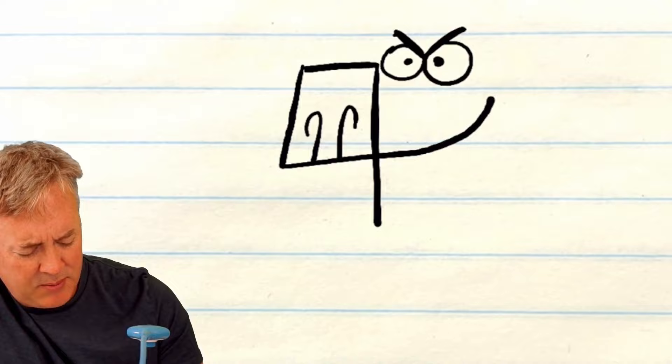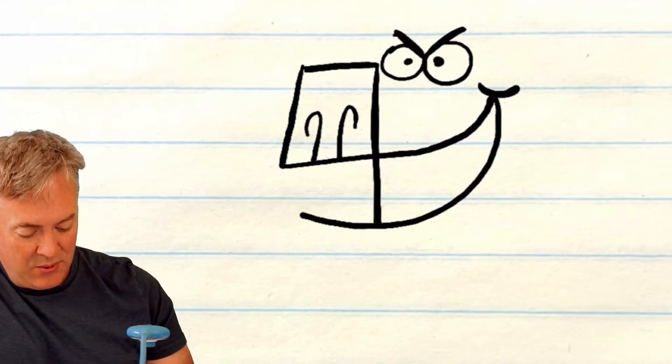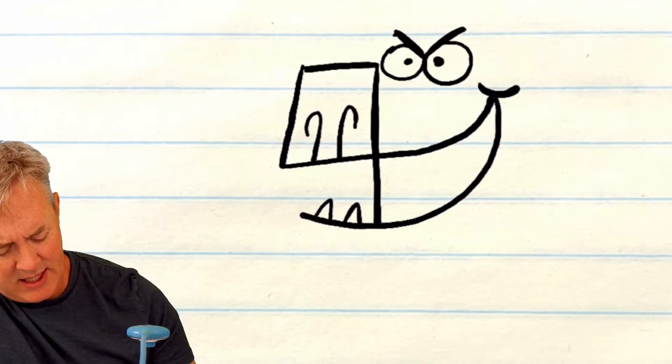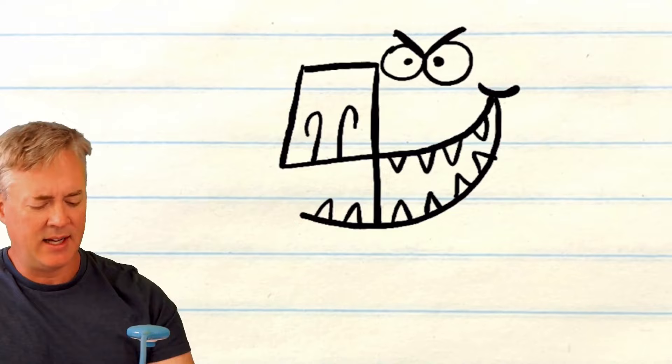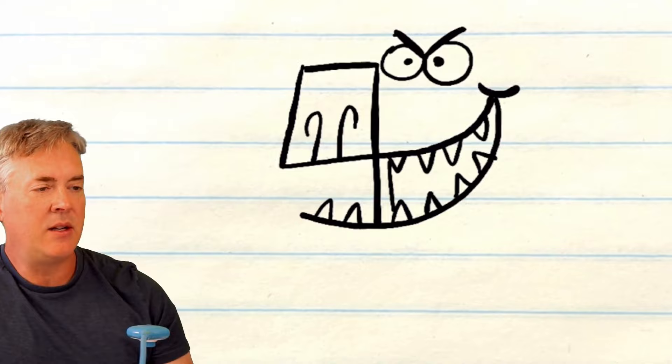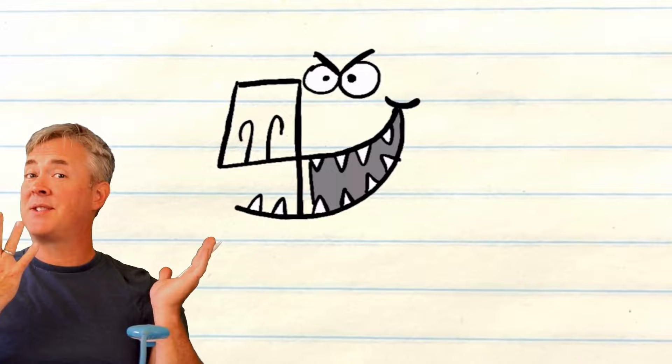Now we can move on to the monster's mouth. Take this part of the form and draw a line that curves up with a little curved line for the cheek, and then let's just bring it around like that. Now we can add some monster teeth - you decide how many teeth you want to add to your monster. I'm gonna draw some teeth here and then one more line to show the other side of the monster's mouth. We can add some gray inside the mouth.